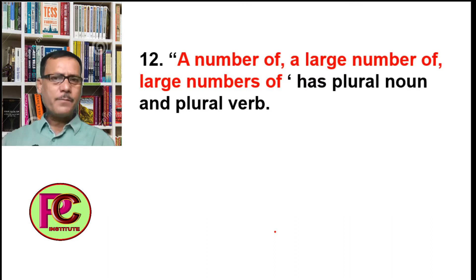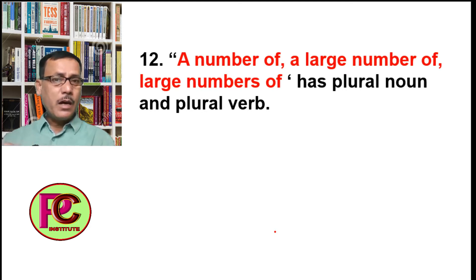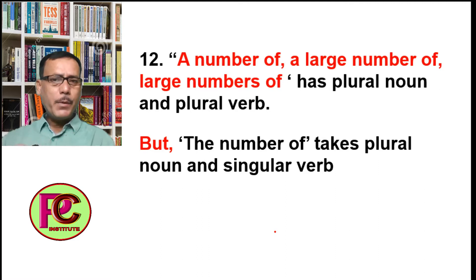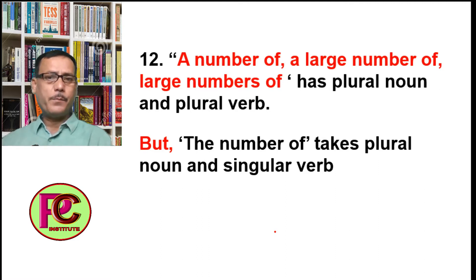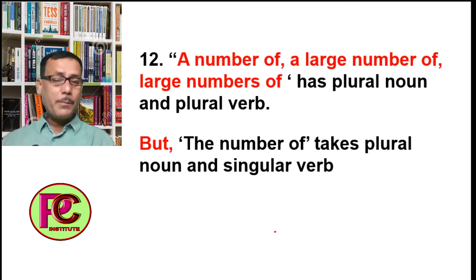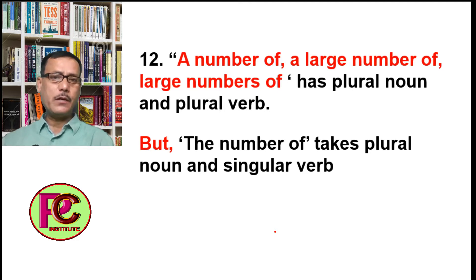Rule Number 12: 'a number of', 'a large number of', or 'large numbers of' — if any of these is the subject, the noun that follows will always be plural, and the verb will also be plural. But 'the number of' takes a plural noun and a singular verb. If 'the number of' is used, the noun that follows will be plural but the verb will always be singular.